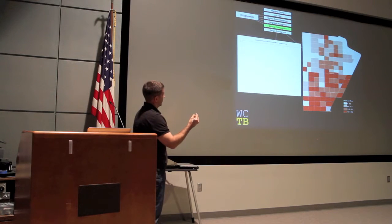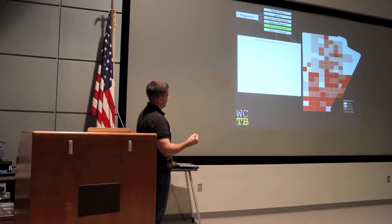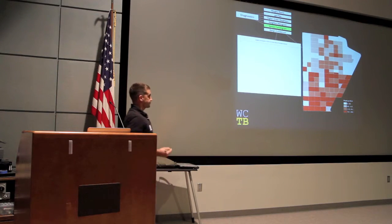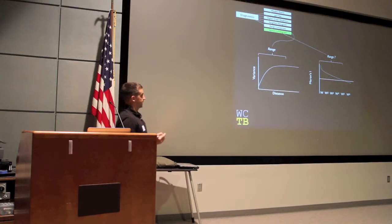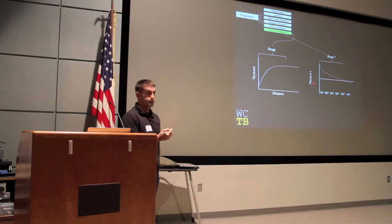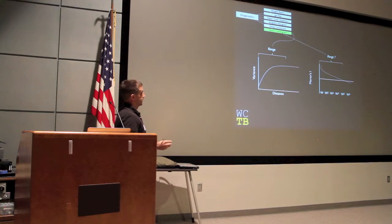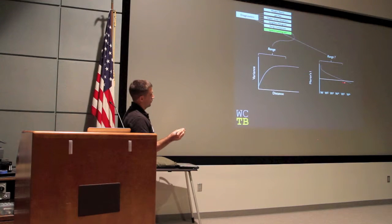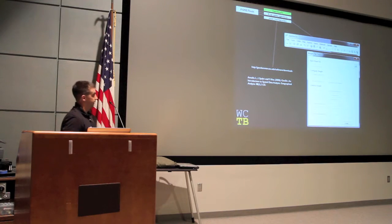The spatial correlogram plots Moran's I values at varying lags, and you can see that the values go down as you move away. This is the population density on the right there. I like to compare it to a semi-variogram in geostatistics — there's something called the range, which is the distance at which spatial autocorrelation typically doesn't exist anymore in the data. That point where our spatial correlogram crosses zero is something I like to compare it to.